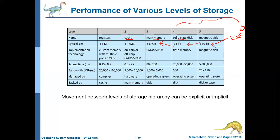The more frequently used content from main memory will be copied to cache memory, and from cache memory the most frequently used data will be copied to registers. So in this context, magnetic disk acts as cache for tapes, solid state disk acts as cache for magnetic disk, main memory acts as cache for solid state disk, cache memory acts as cache for main memory, and registers act as cache for cache memory — so there are several levels of cache available.